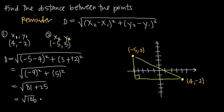Let's talk briefly about what that means. If we plot (4, negative 2) and (negative 5, 3) on coordinate axes, we have (4, negative 2) by going 4 units in the positive x-direction and then down 2 in the negative y-direction. For (negative 5, 3), we go in the negative x-direction and positive y-direction, up to negative 5, 3.